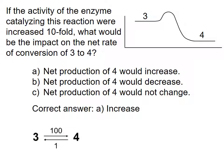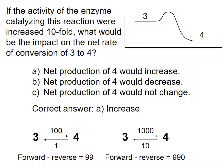For example, if the initial rates were 100 units in the forward direction and 1 unit in the reverse direction, the final rates would be 1000 and 10 units respectively. The difference in reaction rates increases tenfold from 99 to 990. Therefore, compound 3 is converted to compound 4 much more quickly after enzyme activity has been increased.